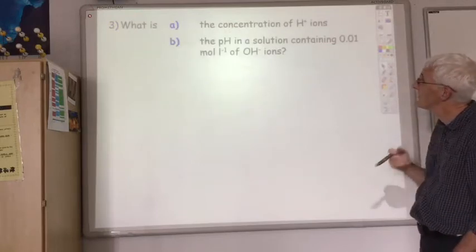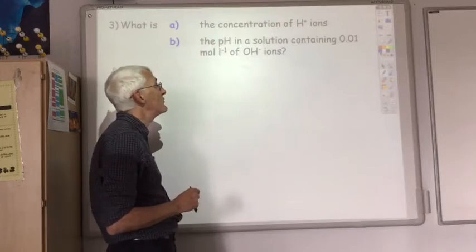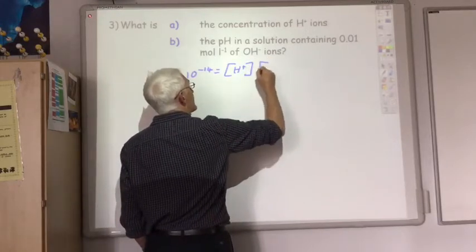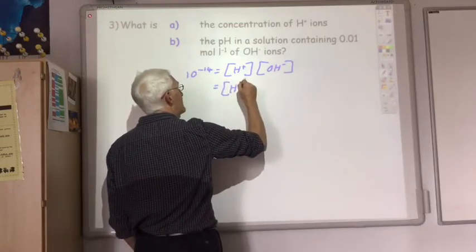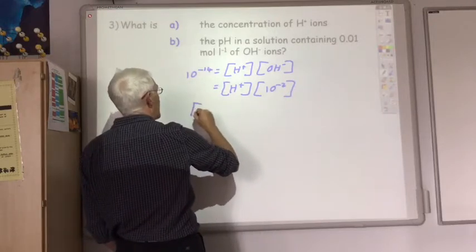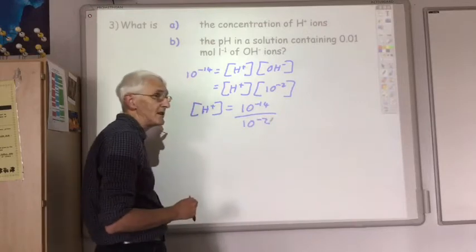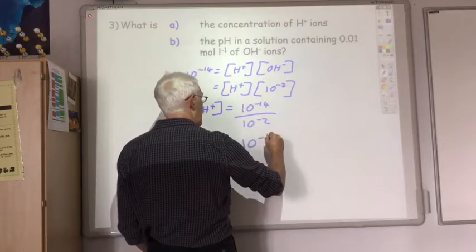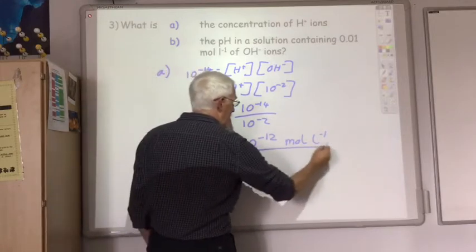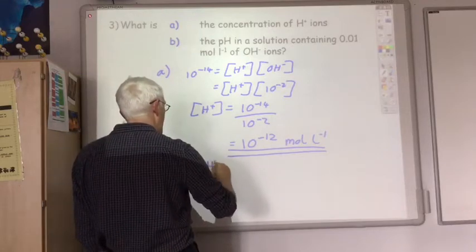The final worked example: what is the concentration of hydrogen ions and the pH in a solution containing 0.01 moles per litre of hydroxide ions? Using Kw: 10 to the minus 14 equals H+ times OH minus. We know OH minus is 0.01, which is 10 to the minus 2. So H+ equals 10 to the minus 14 divided by 10 to the minus 2, giving 10 to the minus 12 moles per litre. Since the hydrogen ion concentration is 10 to the minus 12, the pH equals 12.